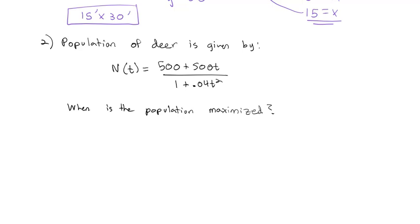Well, we know that maximum optimal point is going to occur when the derivative is equal to 0. So we'll find the derivative of our N function. We have a quotient, so we're going to use the quotient rule. The quotient rule says we take the derivative of the top, which is 500, times the bottom,